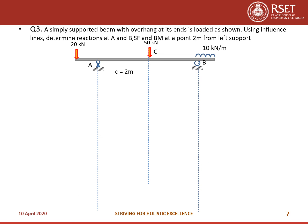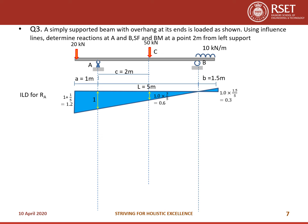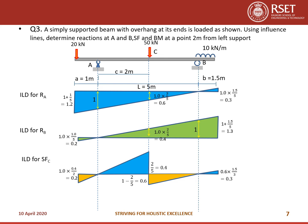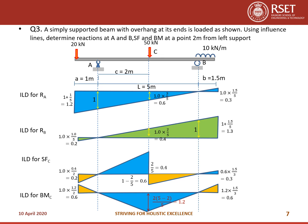Let us see one problem. A simply supported beam with overhang at its ends is loaded as shown. Using the influence line, determine the reactions at A and B, shear force, and bending moment at a section 2 meters from the left support. For the reaction at A, draw the influence line diagram and read off the ordinates: where the 20 kN load acts it is 1.2, where the 50 kN load acts it is 0.6, and where the 10 kN/m UDL acts on the overhang the ordinate is 0.3. For reaction at B and shear force at C, use C/L and 1 − C/L with similar triangles to find the ordinates.